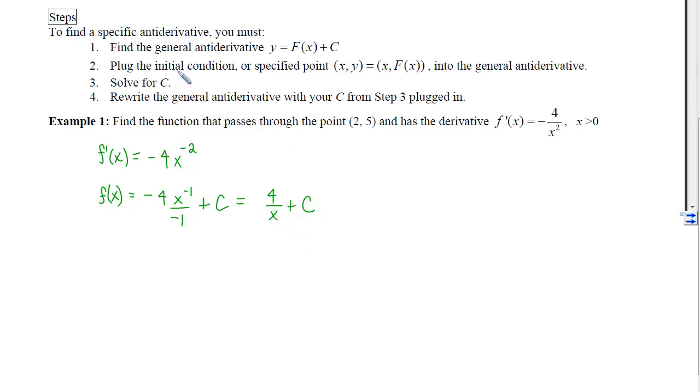So our next step is to plug in the initial condition. Well, I was told that the point (2, 5) is on the graph of this function. That means 5 will come out when I plug a 2 in. Notice that my only variable now is this capital C, so I can solve for it and I will get 3 = C. My final step is to go back to that general antiderivative and plug the c in.